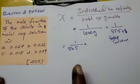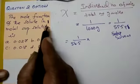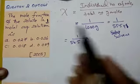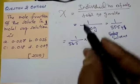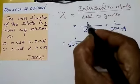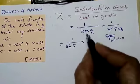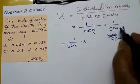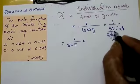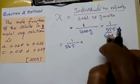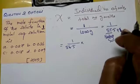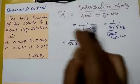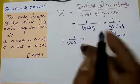The mole fraction of the solute in 1 molar aqueous solution: since it is 1 molar, there is 1 mole of solute in 1 kilogram — that is 1000 grams of water. One kilogram of water contains 55.5 moles of water plus 1 mole of solute, so the total number of moles is 56.5.